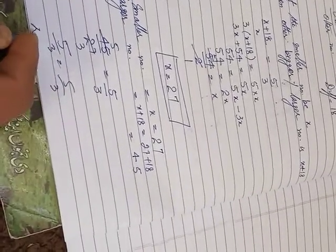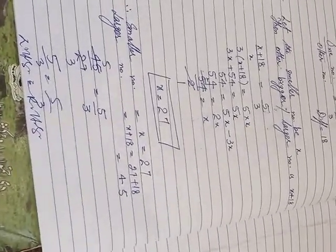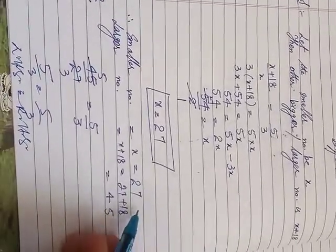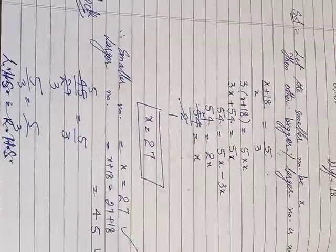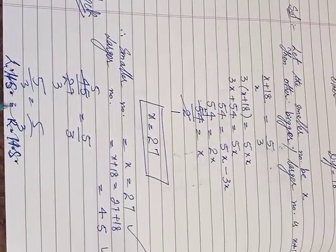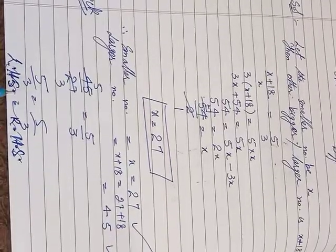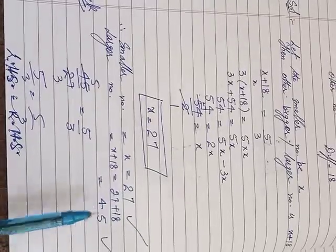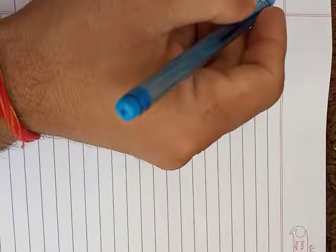Left hand side is equal to right hand side. Both sides are equal, so the answer is correct. The two numbers are 27 and 45.